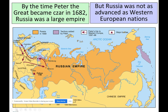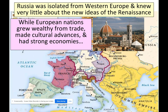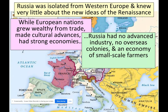By the time Peter the Great became Tsar in 1682, Russia was a massive empire but was not as advanced as Western European nations. It was isolated from Western Europe and didn't know much about the new ideas of the Renaissance. Russia had no advanced industries, no overseas colonies, and an economy of small-scale farmers — far behind the wealthy European nations.